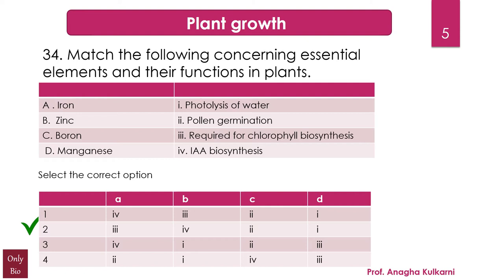Boron has many functions within a plant. It affects flowering and fruiting, pollen germination, cell division, and active salt absorption. The metabolism of amino acids, proteins, carbohydrates, calcium, and water are strongly affected by boron. Manganese is necessary for photosynthesis, including the building of chloroplasts, and is also important in the photolysis of water.